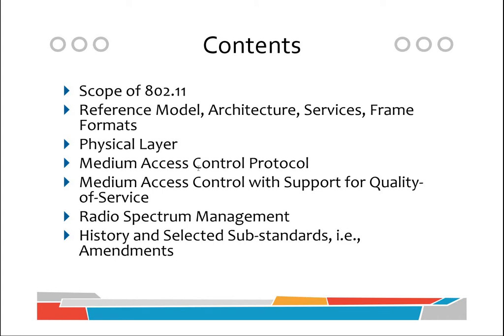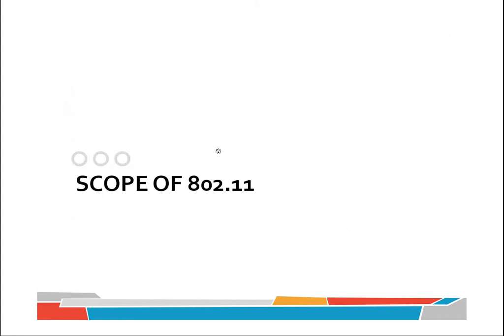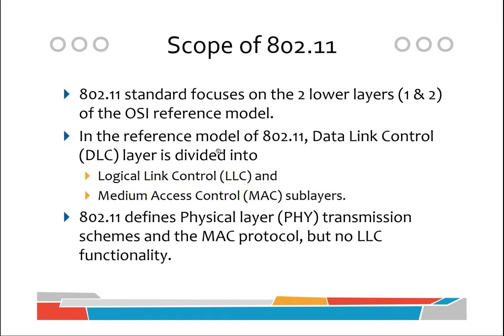The scope of 802.11 describes which layers of the traditional protocol stack — the OSI model or TCP/IP protocol suite — are covered by this protocol. Most protocols standardize specific layers. IEEE 802.11 mainly focuses on two layers: layer one and two — the physical layer and the data link layer. Although it is somewhat related to the network layer, it primarily works with the lower two layers of the OSI reference model.